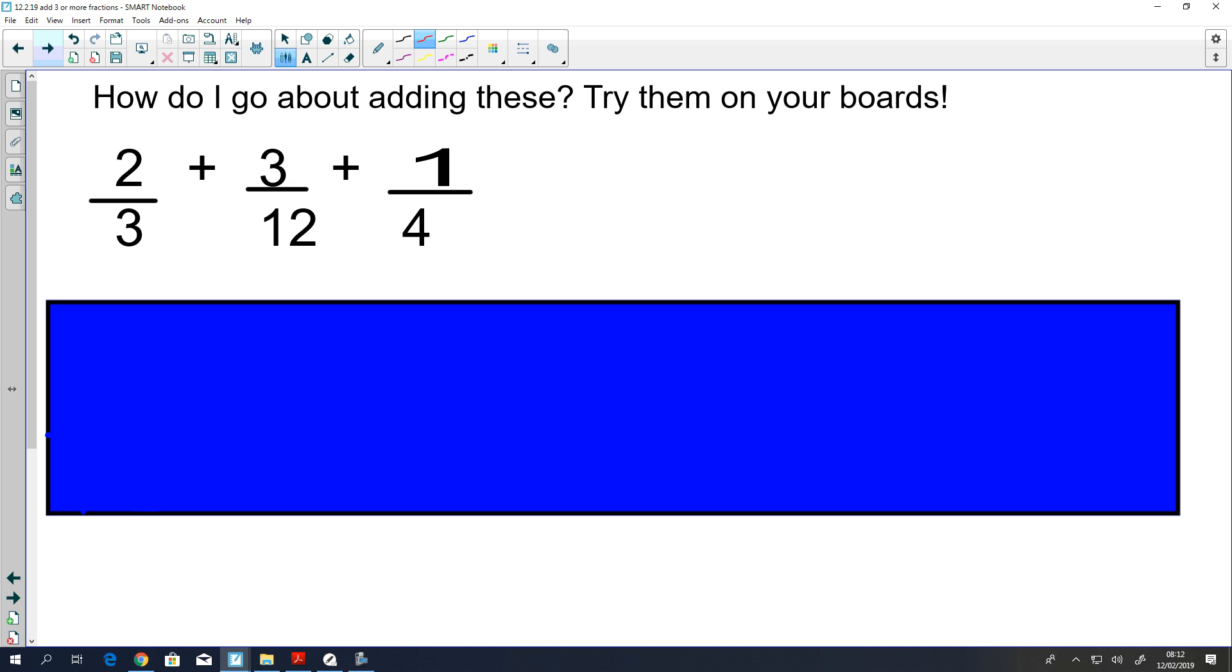If I wanted to rewrite this question, I'm looking at these denominators. I've got a 3, a 12, and a 4. The lowest common multiple of all of them is 12, because 12 appears in the 3 and 4 times tables, and of course in its own. So I'm going to rewrite my fractions. I'll keep that one the same because I don't need to change it.